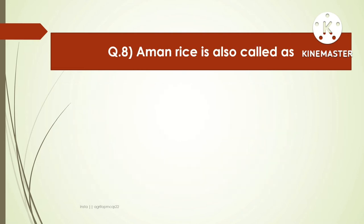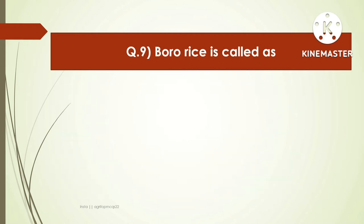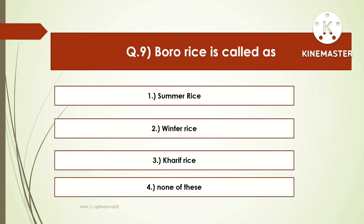The next question is: Aman rice is also called as — options are Kharif rice, winter rice, both A and B, or none of these. The right answer is both A and B. Aman rice is also called Kharif rice and winter rice. The next question is: Boro rice is also called as — options are summer rice, winter rice, Kharif rice, or none of these. The right answer is summer rice. Boro rice is also called summer rice.